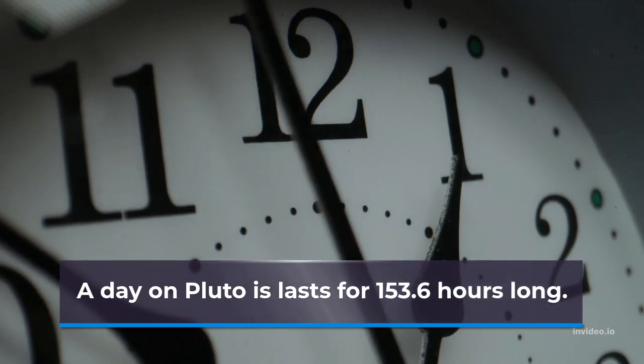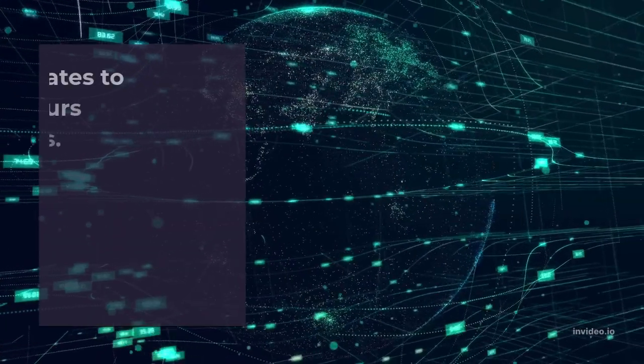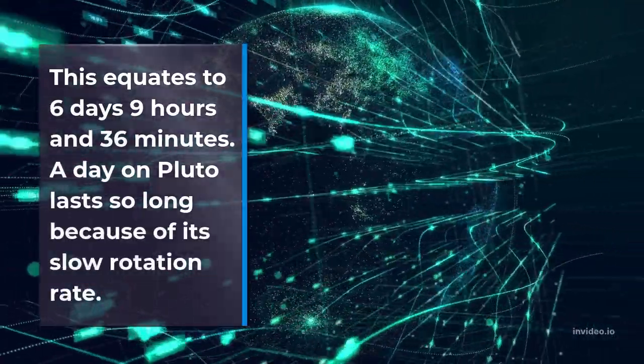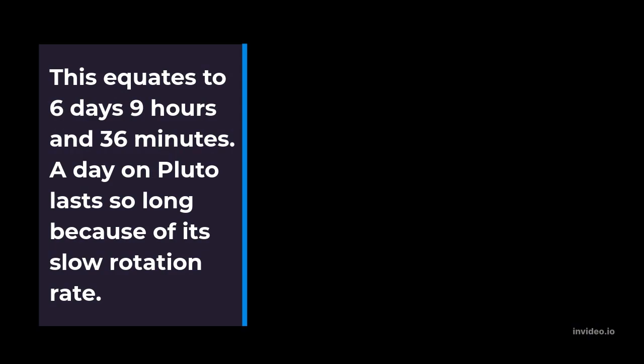A day on Pluto lasts for 153.6 hours long. This equates to 6 days 9 hours and 36 minutes. A day on Pluto lasts so long because of its slow rotation rate.